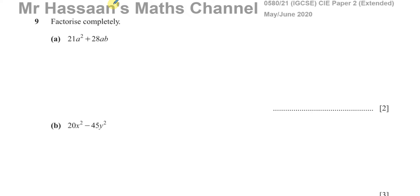It says, factorize completely the expression 21a² + 28ab. So factorizing completely, we've got to take out all the common factors.